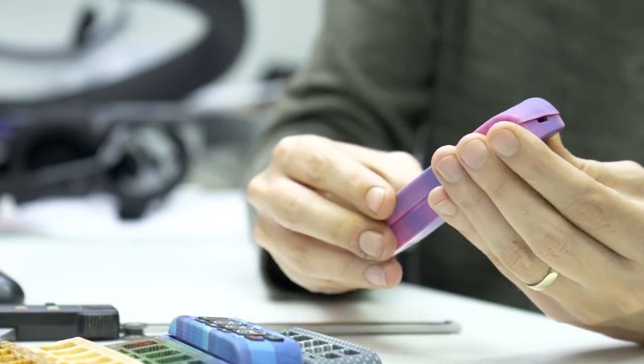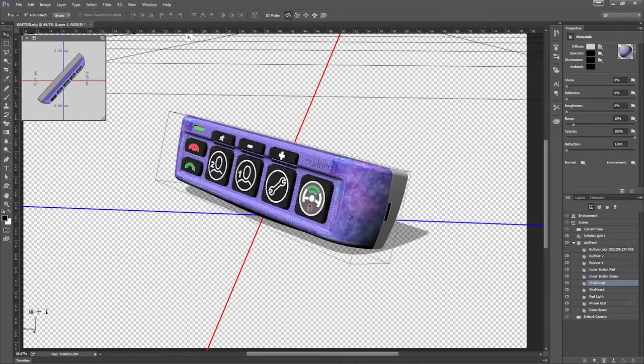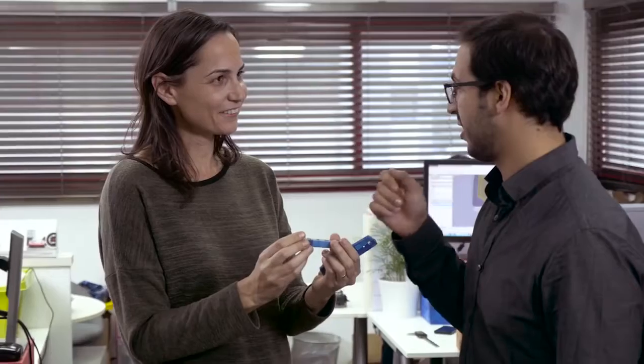I can take a CAD file from SOLIDWORKS, for example, just throw the texture in there and the graphics, and I know that in a few hours I will get a prototype that I can touch and feel.